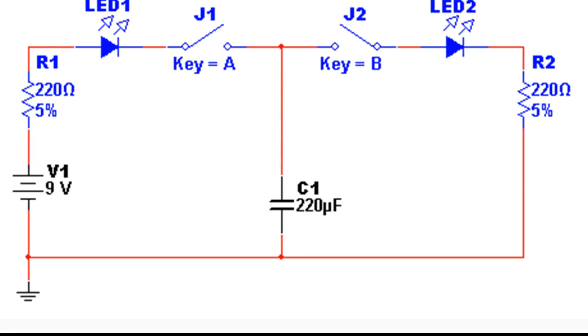This is the circuit I just showed you, and you'll see basically when J1 is closed, the capacitor C1 is charged up through R1 and LED1. And then when J1 is open and J2 is closed, the capacitor discharges across LED2 and R2.